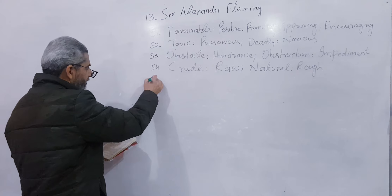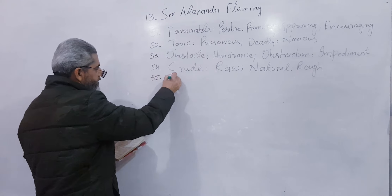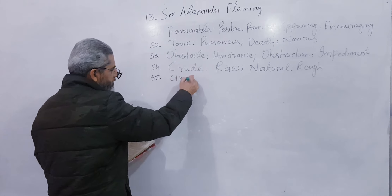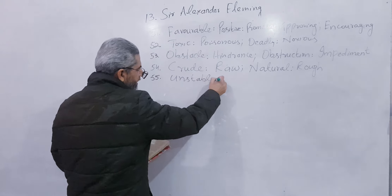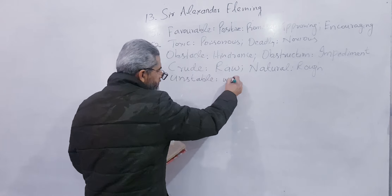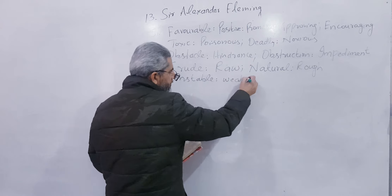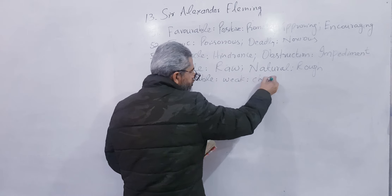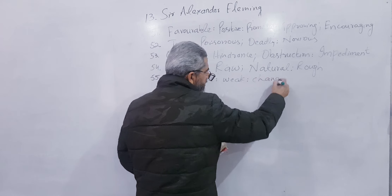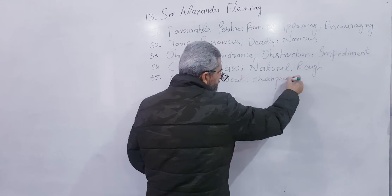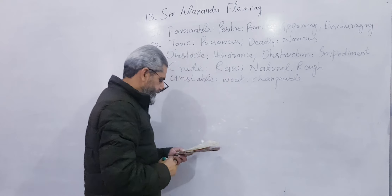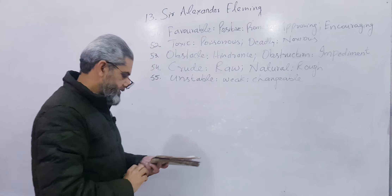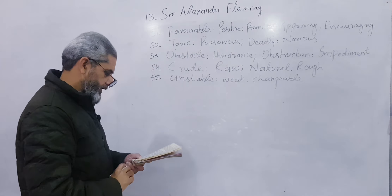Number 55: Unstable. Unstable means weak, changeable, unstable.